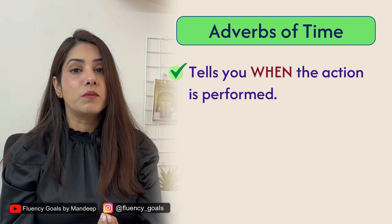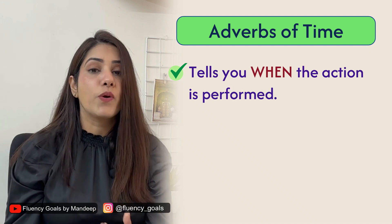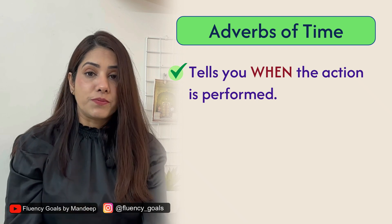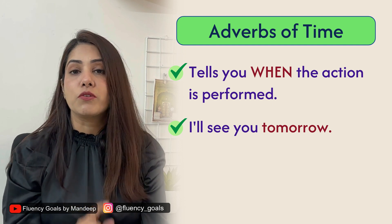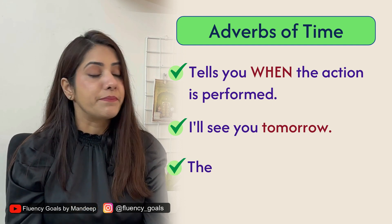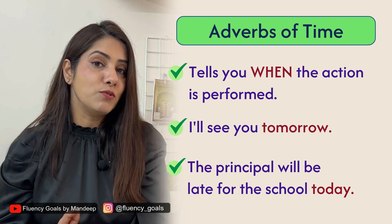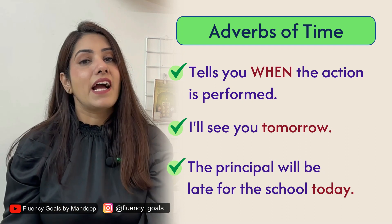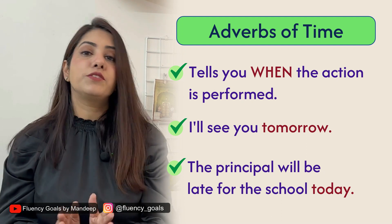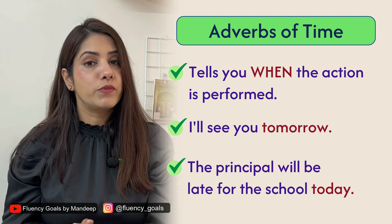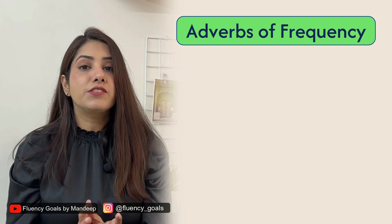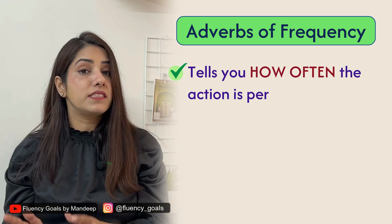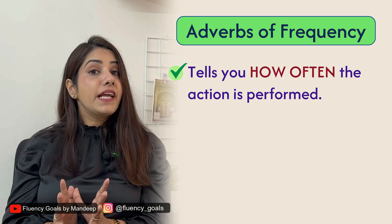Adverb of time tells you when the action is performed. 'I'll see you tomorrow' — tomorrow is the adverb of time, telling you when the action will be performed. 'The principal will be late for school today' — today is the adverb of time. Today, tomorrow, yesterday, now — these are common adverbs of time.